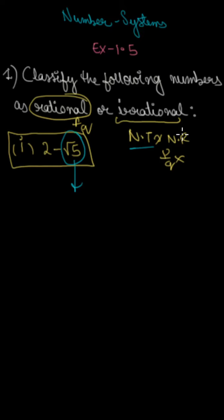And it is an irrational number. So if it is irrational minus 2, it is an irrational number. If it is irrational, then it will be irrational.